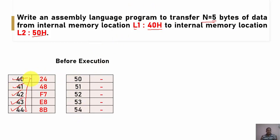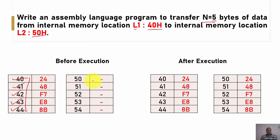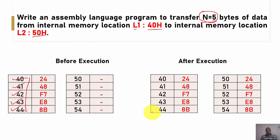Before execution, we have 5 memory locations — 40, 41, 42, 43, 44 — each holding some values. After execution, the value at 40 should be copied to 50, at 41 to 51, at 42 to 52, at 43 to 53, and at 44 to 54. We are transferring these 5 memory blocks from 40H onwards into 50H onwards.